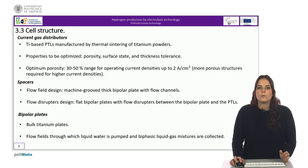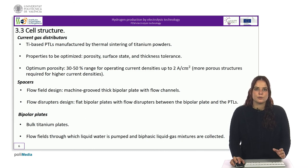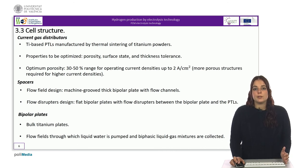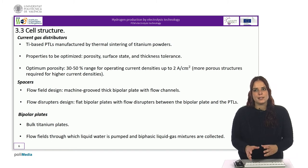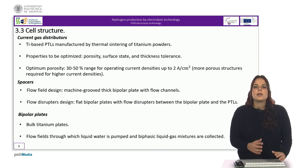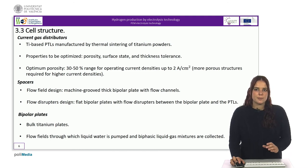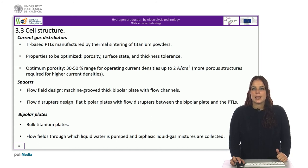Let's look at the characteristics of the current gas distributors. At the anode, titanium-based porous transport layers are usually used to convey electric current from the bipolar plate to the anodic catalytic layer, to transport liquid water from the anodic compartment to the anodic catalytic layer, and to collect and transport gaseous oxygen from the anodic catalytic layer back to the anodic compartment. They are usually manufactured by thermal sintering of titanium powders. Several properties need to be optimized, mainly porosity, surface state, and thickness tolerance.